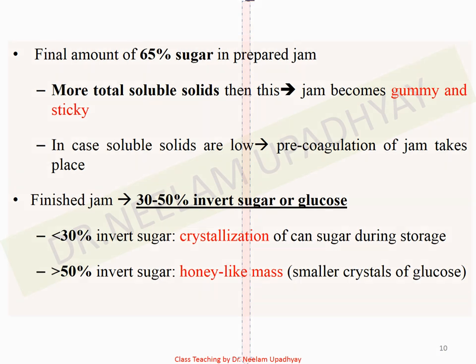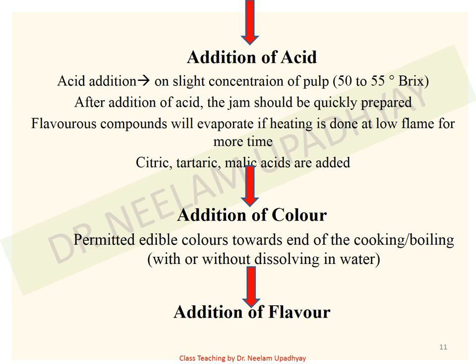Next is addition of acid. Once sugar is added, cooking continues, and during cooking you have to add acid. As repeatedly stated, the right combination of pectin, sugar, and acid will only result in perfect setting of jam. You have to take into account the acidity of your fruit after preparation, and then add some extra amount of acid. Generally four to six grams of acid is required for every one kg of sugar.